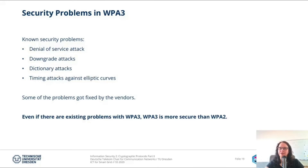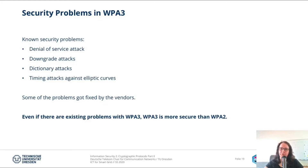Unfortunately, there are already well-known security problems with WPA3 — for example, a denial-of-service attack, a downgrade attack, dictionary attacks, and timing attacks against some of the elliptic curves. Not every elliptic curve is safe to use. Most of the problems got fixed by vendors, though not all of them. But even if there are existing problems with WPA3, WPA3 is more secure than WPA2, and I highly recommend you upgrade to WPA3 if it's possible.